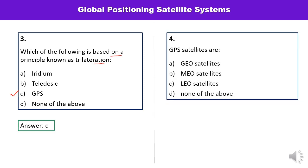Question number four: GPS satellites are GEO satellites, MEO satellites, LEO satellites, or none of the above? You must have heard these terms — medium earth orbit, low earth orbit. GPS satellites are actually MEO, medium earth orbit satellites. So the correct answer is B.